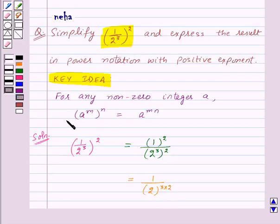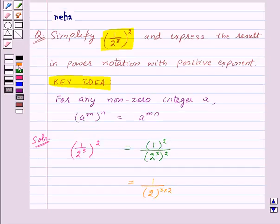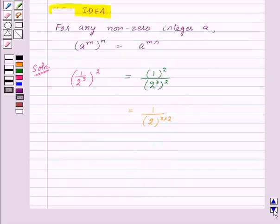Using the key idea we discussed, this equals 1/2^6. So here we have a positive exponent of 6. Thus, 1/2^6 is the required answer.